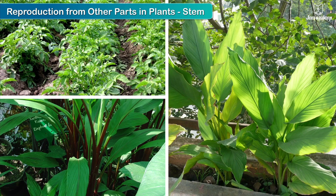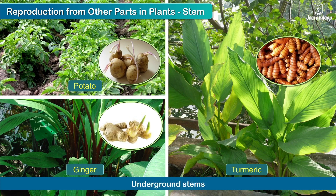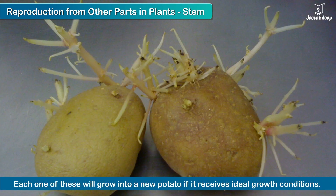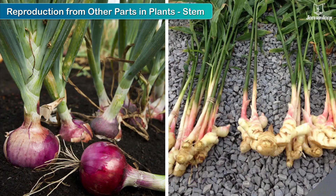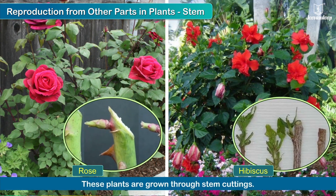Stem: some stems like potato, ginger and turmeric are underground stems. In the picture you can notice small growths in the form of eyes on the potato. Each one of these will grow into a new potato if it receives ideal growth conditions. These small growths are also called potato eyes. Other examples are onion and ginger. Some plants like rose and hibiscus (shoe flower) are grown through stem cuttings.